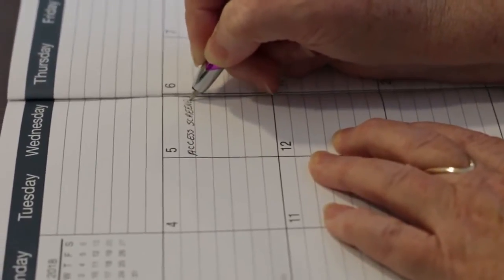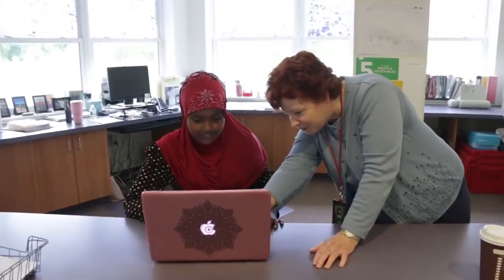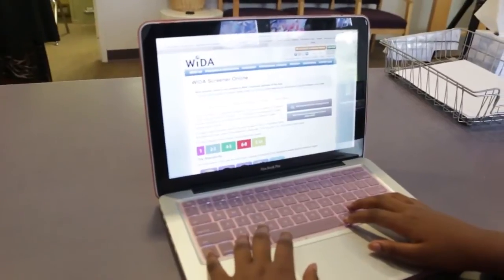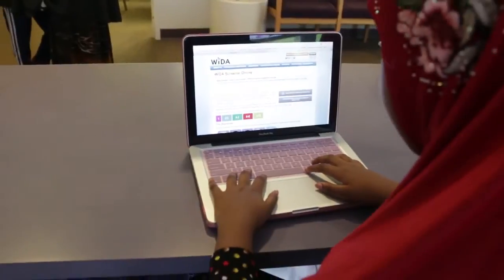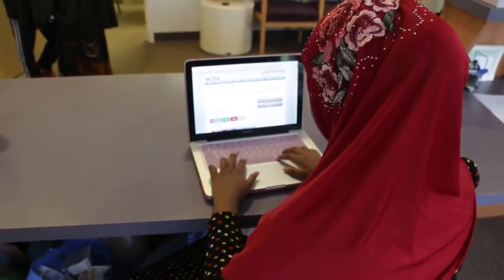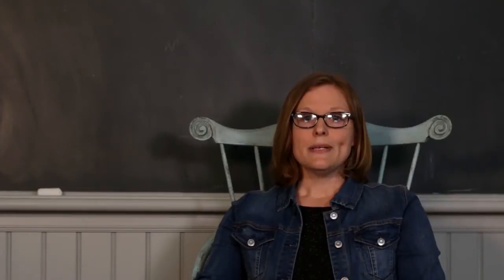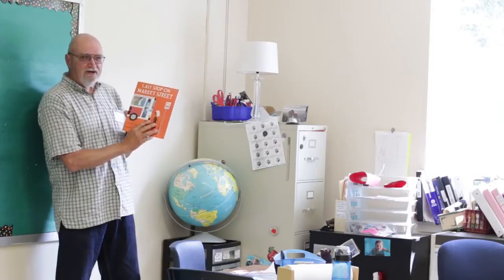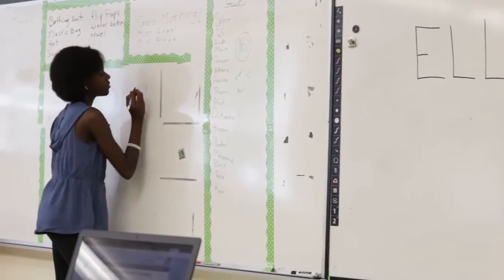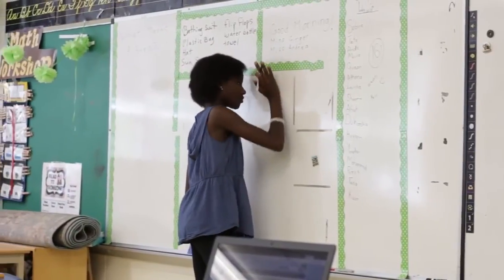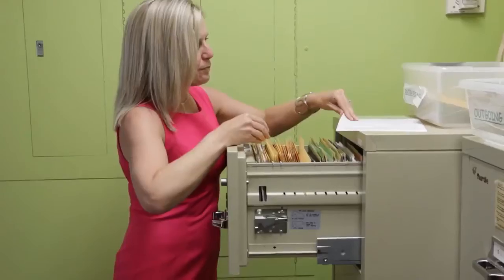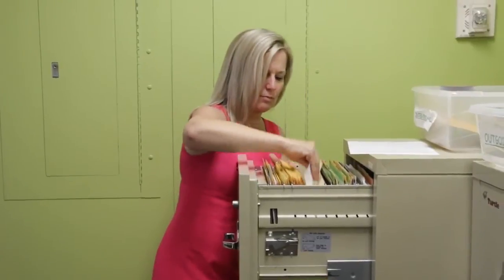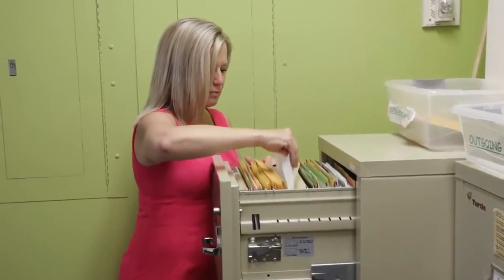If no ESL-endorsed teacher is on staff, it would be advisable to proactively locate one who can help you complete the identification process as needed. It's not required that the screener be administered by an ESL-endorsed teacher, but it's strongly preferable. If the student scores above the English Learner Identification Threshold, the student is not an English Learner and no further steps are necessary. If the score is below the threshold, the student will receive English Language Support Services from a 660 ESL-endorsed teacher until exiting by demonstrating proficiency on the WIDA Access for ELL's assessment. Both the Language Use Survey and the English Language Proficiency Screener Report must be kept in the student's cumulative file.